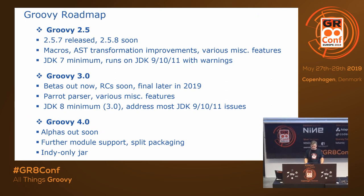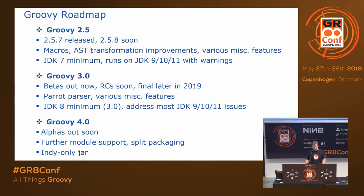Now let's look at the roadmap. There's about one and a half hours of content for Groovy 2.5 — most of you are probably familiar with that, so I'll skim through it quickly. Then I'll look at what's in Groovy 3 and what we're hoping to do for Groovy 4. For Groovy 3, we expect maybe one more beta and then some release candidates, so the final release is not far away. As soon as we do the first RC for Groovy 3, we'll branch the code base and put out some Groovy 4 alphas.